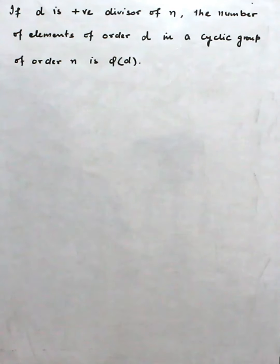If d is a positive divisor of n, the number of elements of order d in a cyclic group of order n is φ(d).